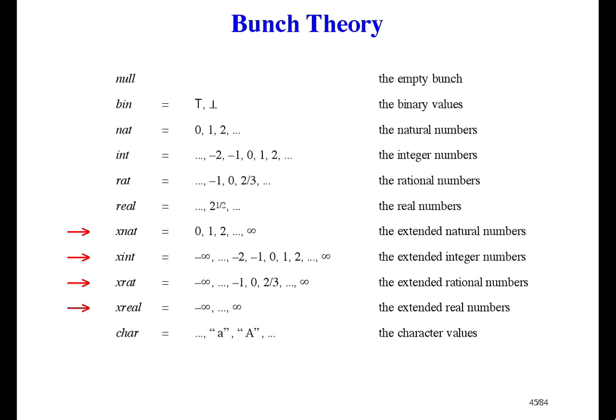The next four bunches, x-nat, x-int, x-rat, and x-real, are extended versions of the previous four. They just have infinity included. And finally, char is the characters.